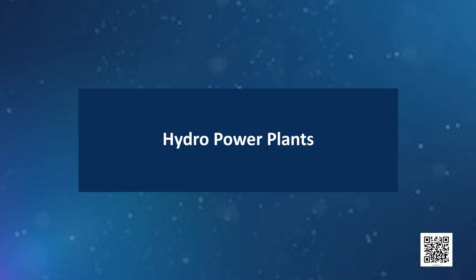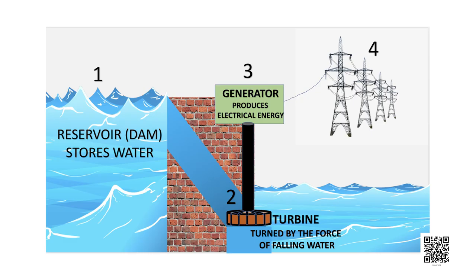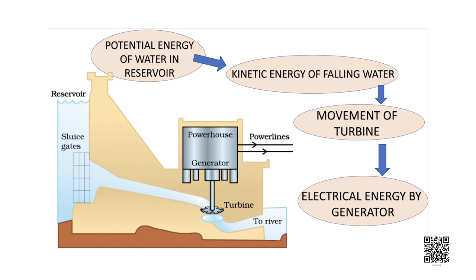Another traditional source of energy is the kinetic energy of flowing water, harnessed through hydro power plants. A dam is built on a river, raising the water level to create falling water. The force of falling water pushes against the turbine blades, causing the turbine to spin. Connected to the turbine is a generator, which converts the mechanical energy of the turbine into electrical energy. The water in the reservoir is refilled each time it rains, making hydro power a renewable source of energy.